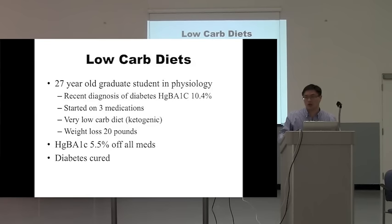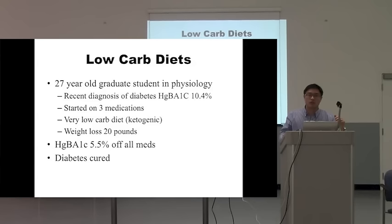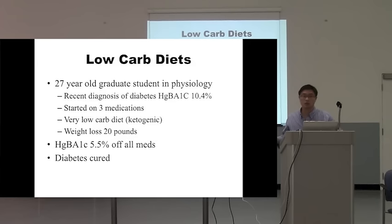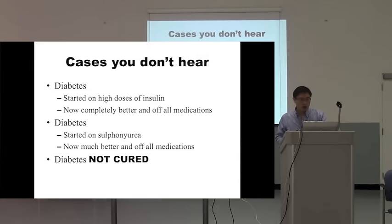A third case: a 27-year-old graduate student in physiology was diagnosed with diabetes with a hemoglobin A1C of 10.4%. Her doctor immediately started her on three medications, but she didn't want to take them. She dug through the internet and put herself on a ketogenic diet — an extremely low carbohydrate diet. She lost about 20 pounds and at her next visit her A1C was 5.5%, meaning her diabetes was completely reversed with a ketogenic diet.